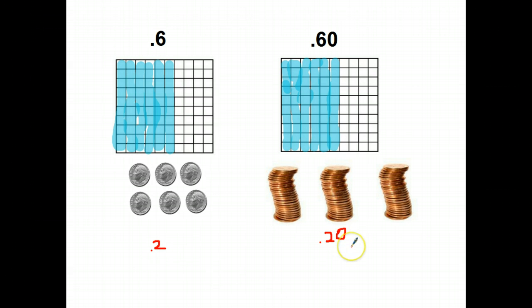Putting a zero on the end of a decimal number does not change its value. I have two dimes here, I have twenty pennies here, I have six dimes here, I have sixty pennies here. It's the same value.